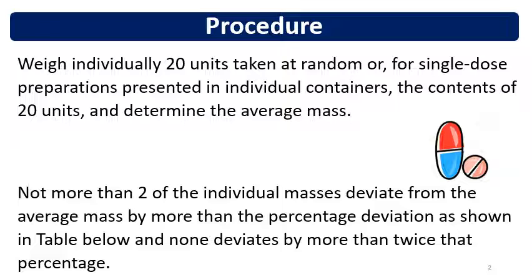For performing this test, 20 units of tablets are taken as a random sample and the limits for weight are set as per the pharmacopoeia requirement. Weigh individually 20 units taken at random, or for single dose preparations present in individual containers like sachets or bottles. The content of 20 units are weighed and the average mass is determined. For tablets, individually 20 tablets are taken and weighed, then the average weight of those 20 units is calculated.